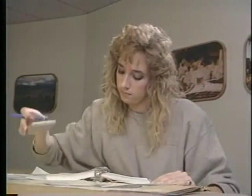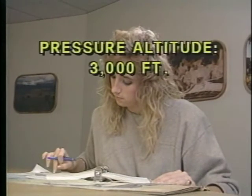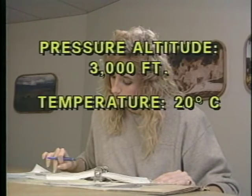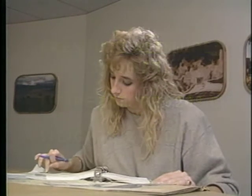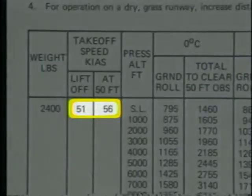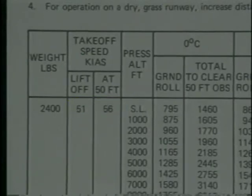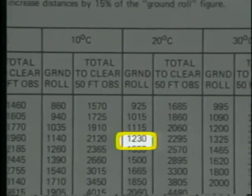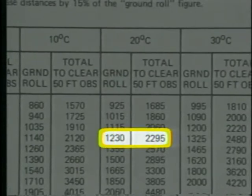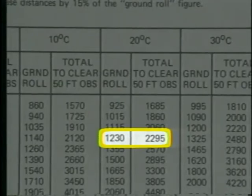For this example, assume the following conditions: pressure altitude is 3,000 feet, temperature is 20 degrees Celsius, and the airplane is at its maximum takeoff weight of 2,400 pounds. The table lists the appropriate airspeeds for lift-off and the recommended speed once 50 feet off the ground. Locate the pressure altitude of 3,000 feet, then move horizontally to the current temperature of 20 degrees Celsius. Under these conditions, the ground roll distance is 1,230 feet, and the distance required to clear a 50-foot obstacle is 2,295 feet.